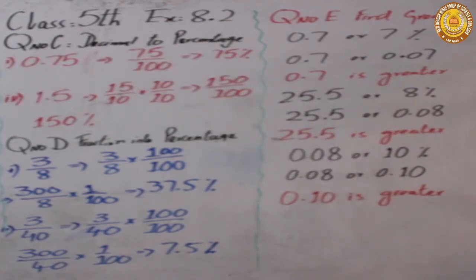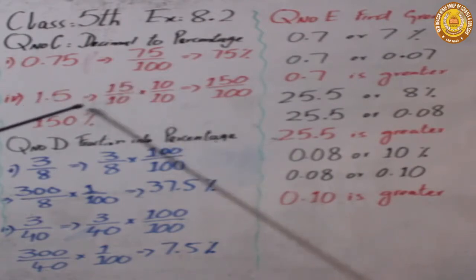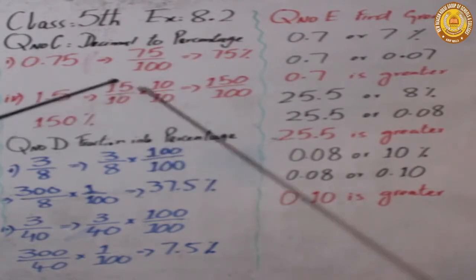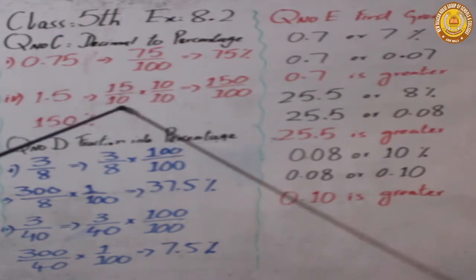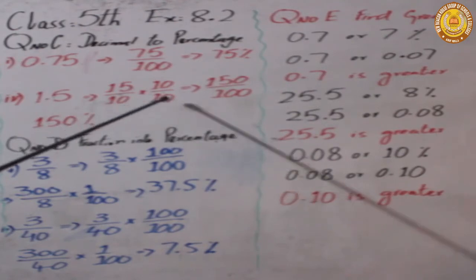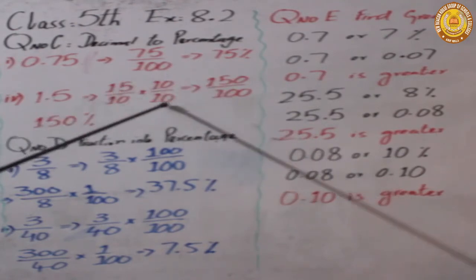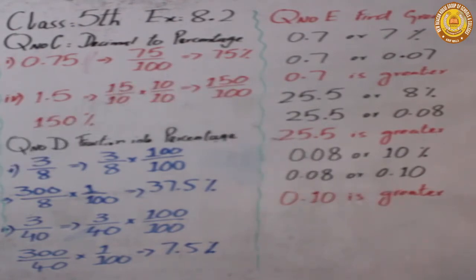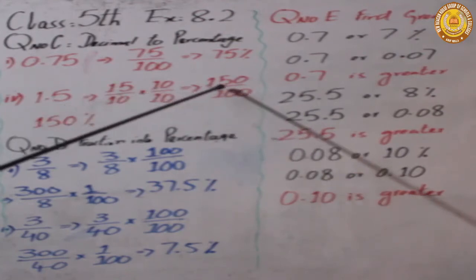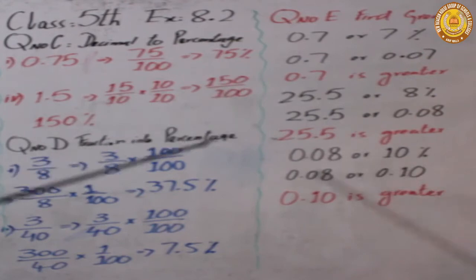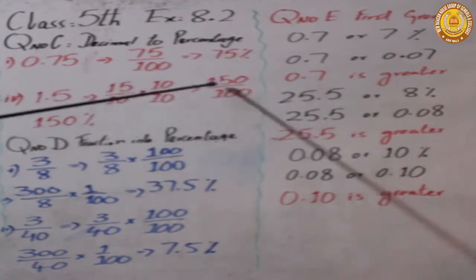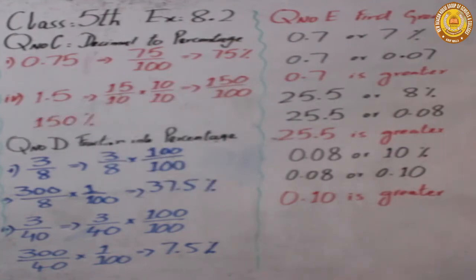The next question is 1.5. Since there is one value after the decimal point, we divide by 10 — so we get 15 over 10. But the denominator is not 100. To make it 100, we multiply both numerator and denominator by 10, giving us 150 over 100, which we write as 150%.